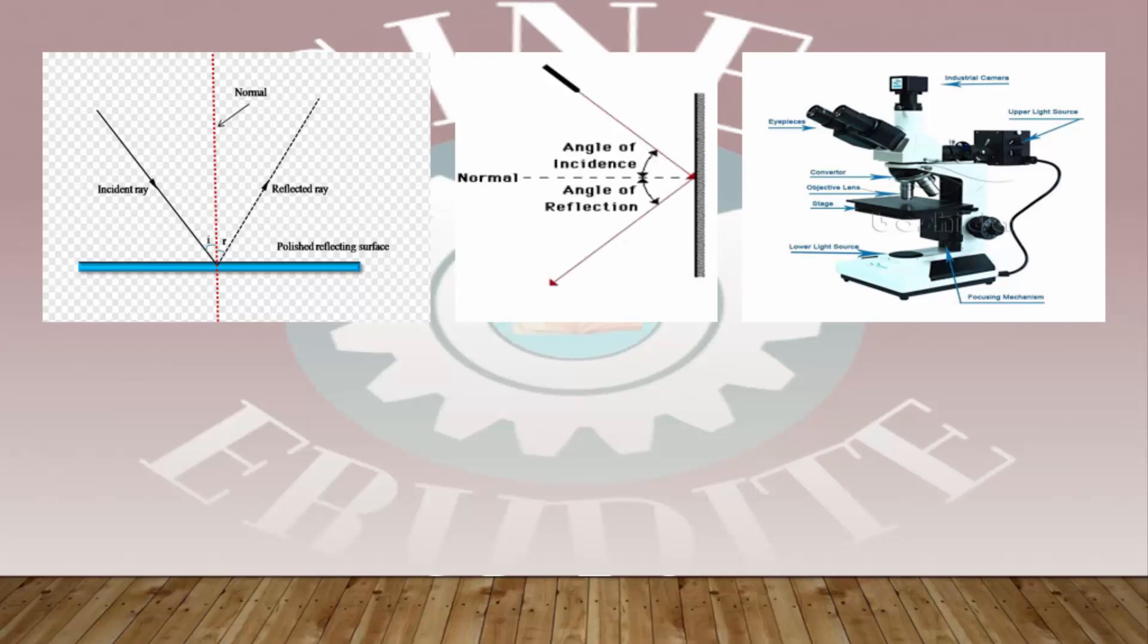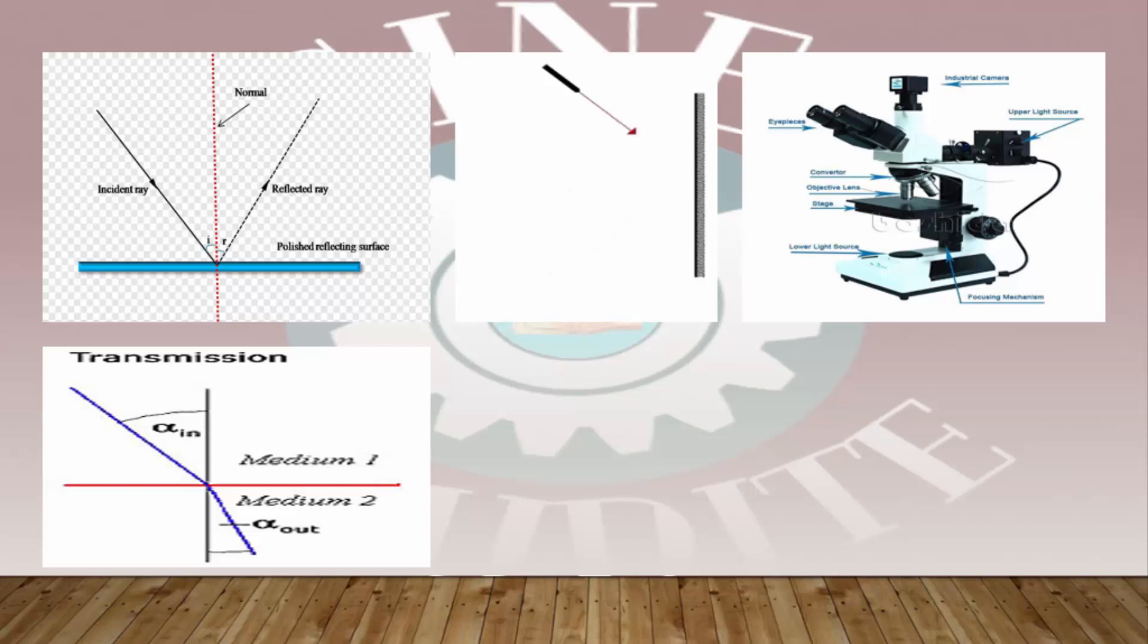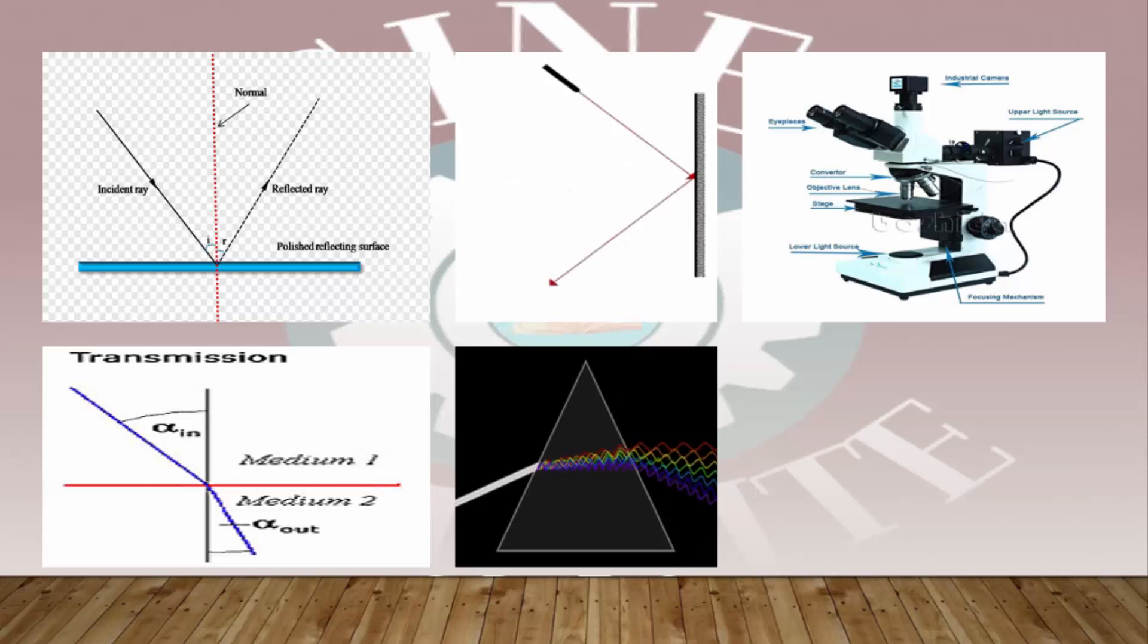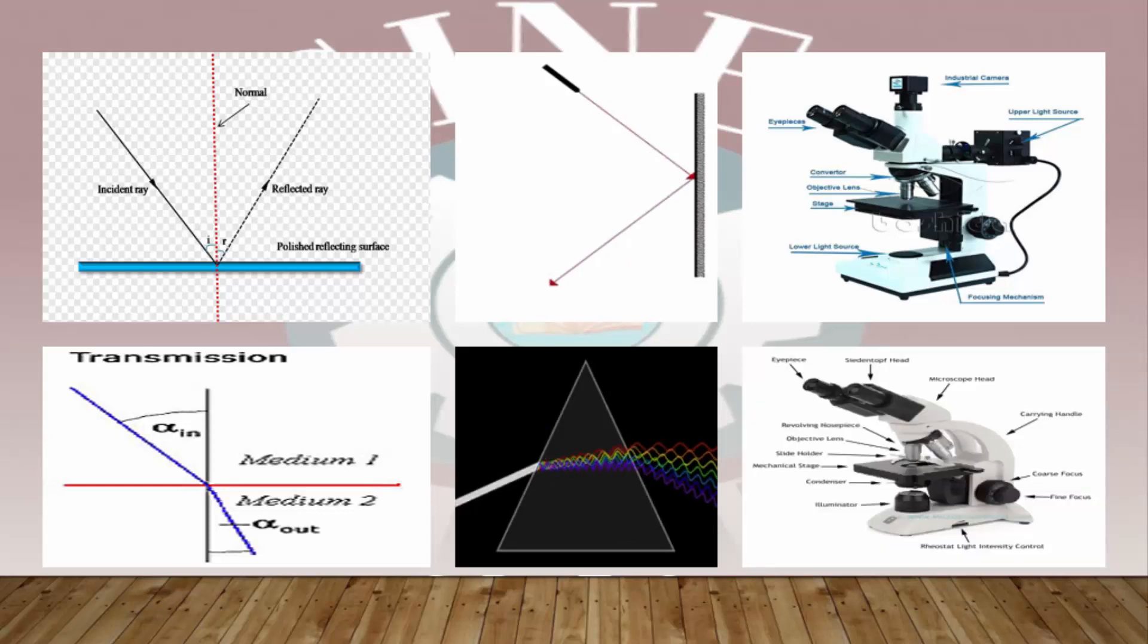The other phenomena is transmission of light through the material. As in case of prism, whenever light passes through the prism it splits into seven colors but it is transmitted through the prism in seven portions. Mostly biological microscopes use the transmitted light, and in this series of lectures biological microscopes or biological samples will scarcely discuss.